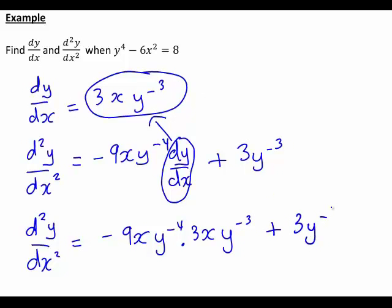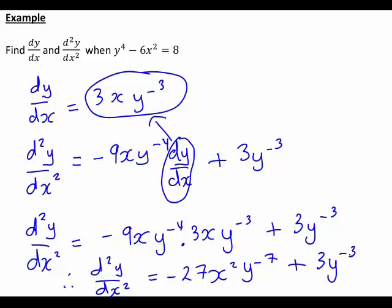And then as usual we can just tidy that up a bit more using indices in this particular case and also multiplying those constants together. That will become negative 27x squared in this case and then y to the negative 4 times y to the negative 3 gives y to the negative 7. So altogether the second derivative of y with respect to x becomes negative 27x squared y to the negative 7 plus 3y to the negative 3.